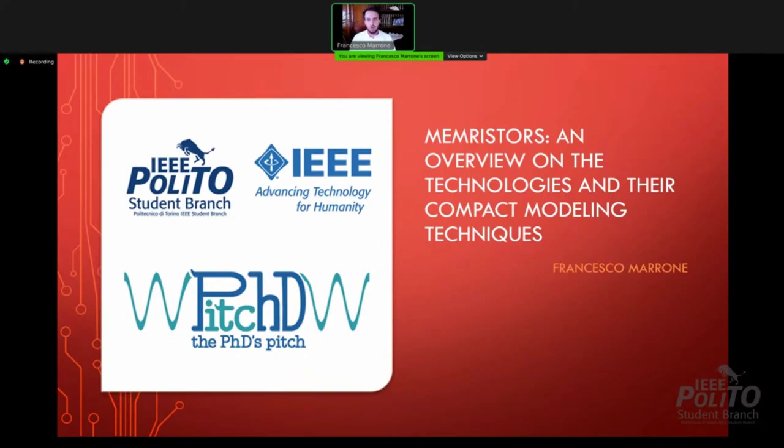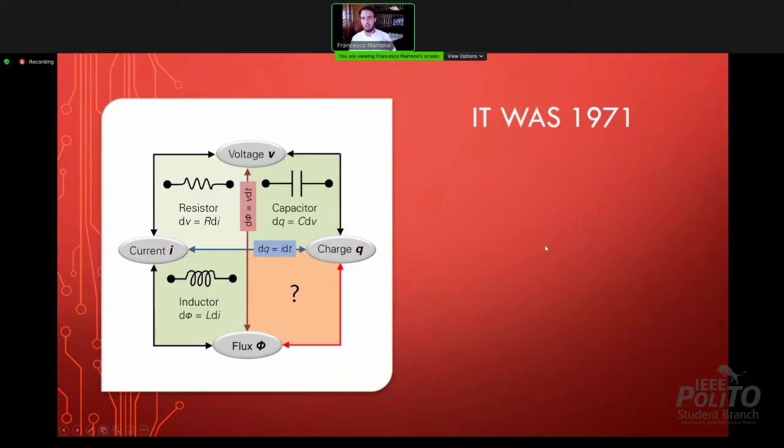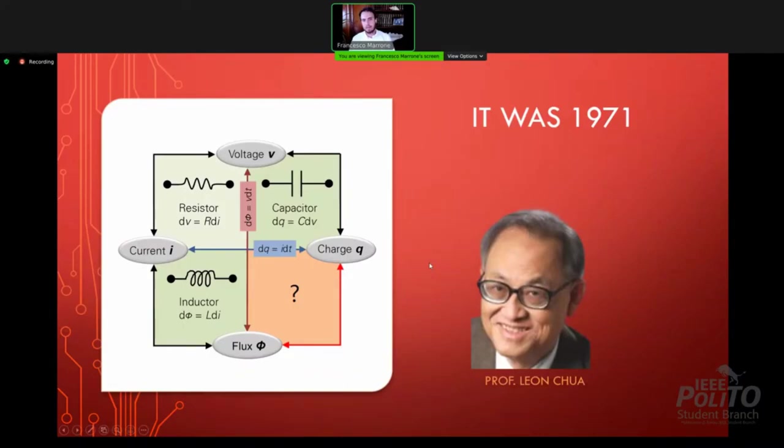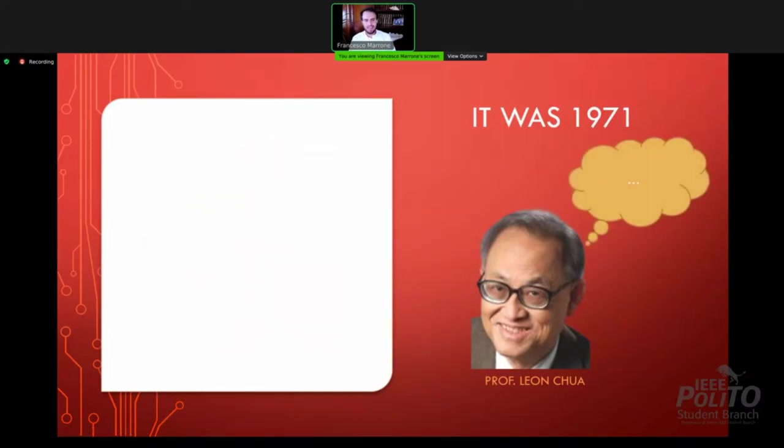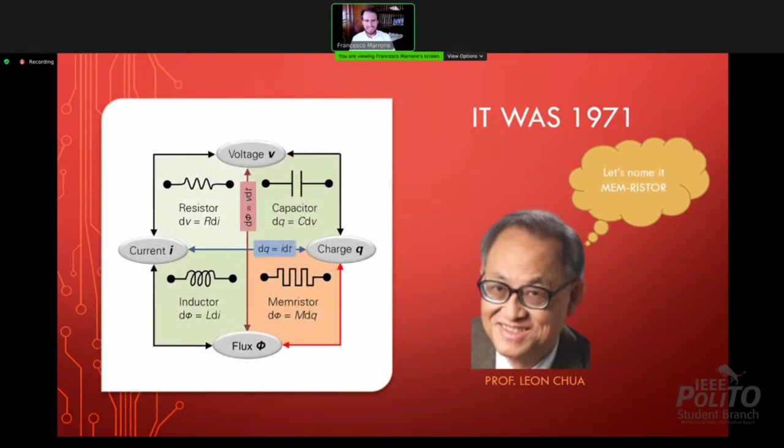But first, let's take a look back at the history of memristors. When everything started in our field, it was 1971. There was this guy, now in his 80s, Professor Leon Chua, that by writing down on a sheet of paper this simple diagram linking voltage, flux, magnetic flux, charge, and current, he noticed that something was missing, this thing that made the diagram asymmetrical. He decided to call it the memristor.